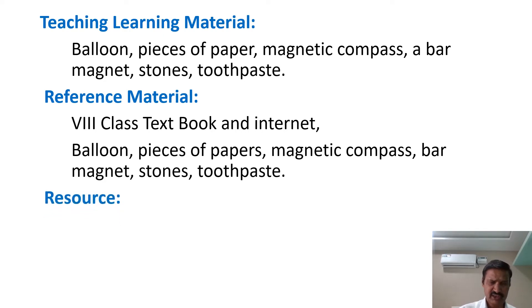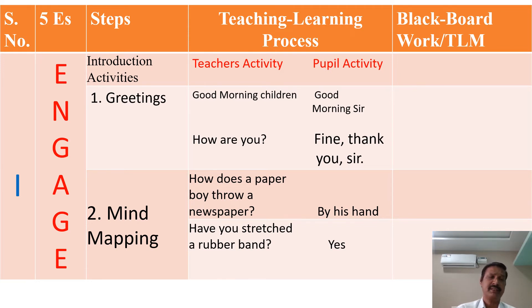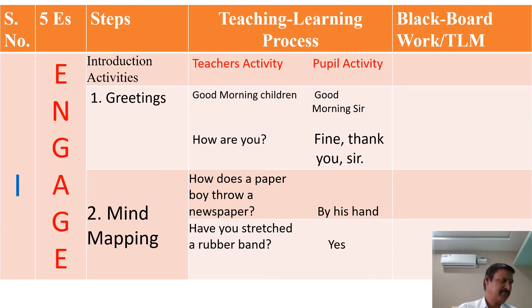Resources: environment and internet. So, before going to prepare a table, you have to write some notes on the topic, that is, force, for example. In this table, there are five columns: serial number, Five E's, steps, teaching learning process — which has two sub-columns: teacher's activity and pupil activity — and the fifth one is blackboard work or teaching learning material. This table is based on the Five E's model, which is related to the constructivistic teaching model.